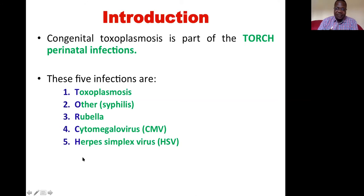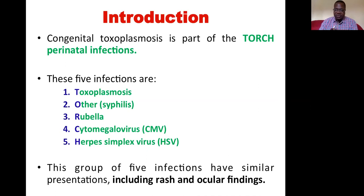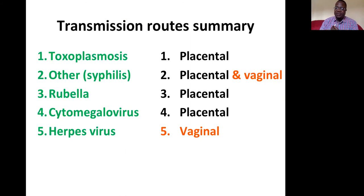These diseases were grouped together because they share similarities in their clinical findings — most notably, they all affect the eyes, causing ocular clinical presentations, and they can also cause skin rash on the body. In terms of route of transmission, four out of five of these infections are transmitted transplacentally — through the placenta from mother to unborn child.